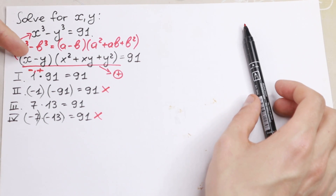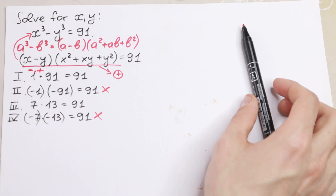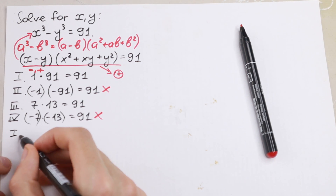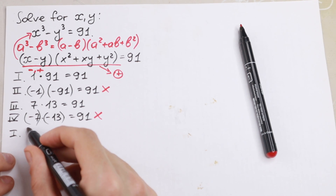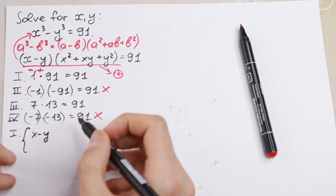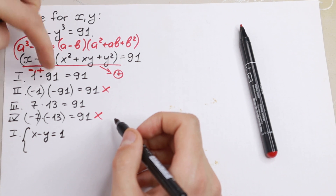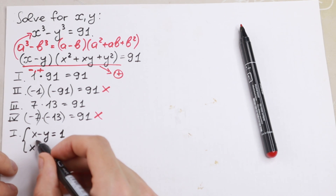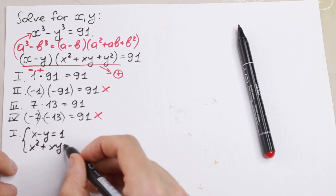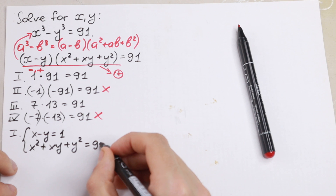We need to solve a system of equations. For the first case, x minus y can be 1 and x² plus xy plus y² can be 91. So our first system is: x minus y equals 1, and x² plus xy plus y² equals 91.